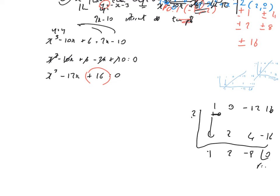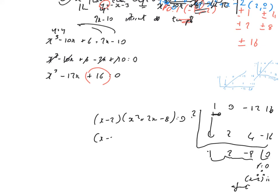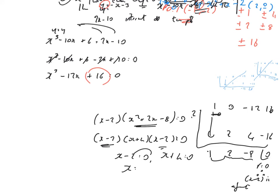Since x equals 2 gives remainder 0, (x minus 2) is a factor. So we get (x minus 2)(x squared plus 2x minus 8) equals 0. Factorising x squared plus 2x minus 8: two numbers that multiply to give minus 8 and add to give 2 — that's 4 and minus 2. So (x minus 2)(x minus 2)(x plus 4) equals 0, giving x equals 2 and x equals minus 4.